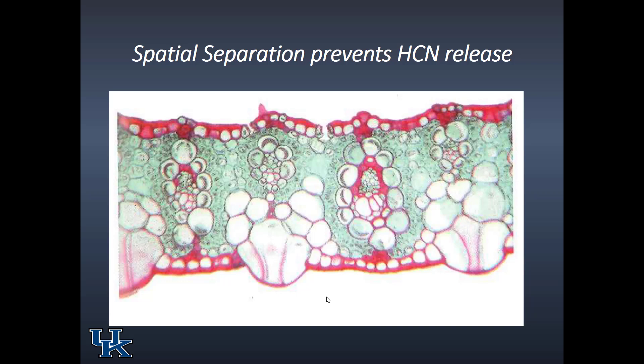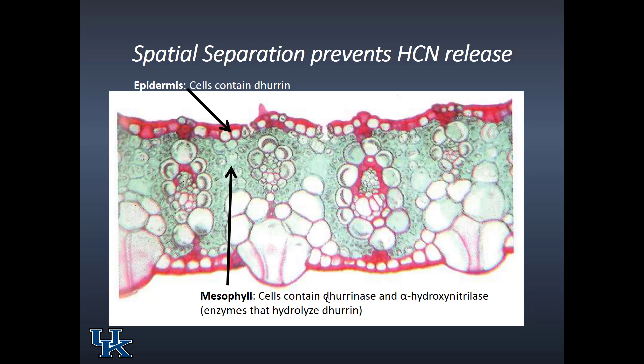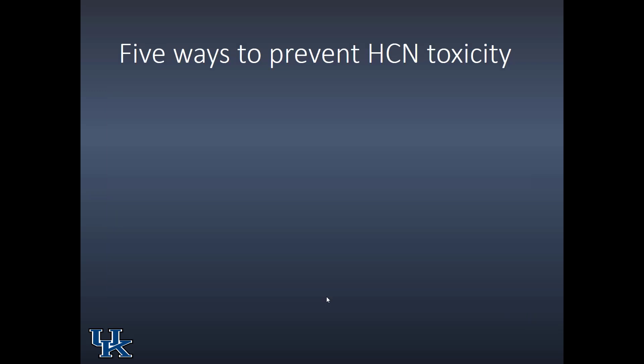I included this diagram to show visually the separation of dhurrin and the enzymes that hydrolyze it. The epidermis — the outside layer of cells — contains dhurrin. The mesophyll — the cells in the middle of the leaf — contains dhurrinase and alpha-hydroxynitrolase, the enzymes that will hydrolyze dhurrin and split it into the cyanide part plus the sugar part.